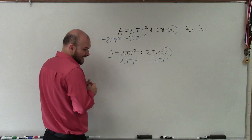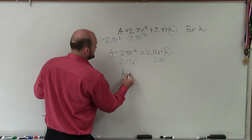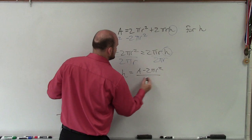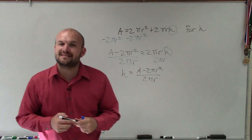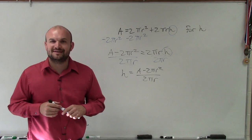So therefore, I end up with h equals A minus 2πr² divided by 2πr. So there you go, ladies and gentlemen. That is how you solve your literal equation with multiple terms. Thanks.